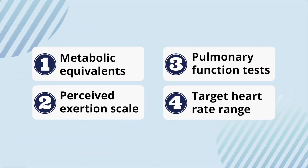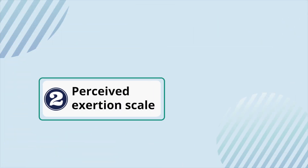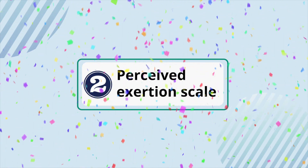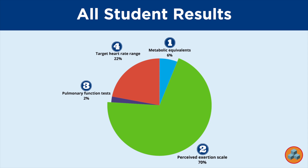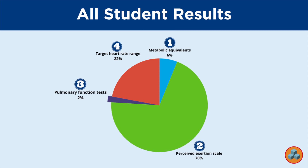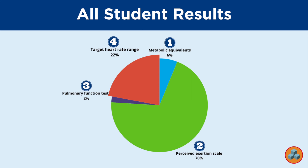The correct answer is Option 2. Looking at the student data: 6% of students selected Option 1, Metabolic Equivalence. 70% of students selected Option 2, Perceived Exertion Scale — the correct response. 2% of students selected Option 3, Pulmonary Function Tests. 22% of students selected Option 4, Target Heart Rate Range.